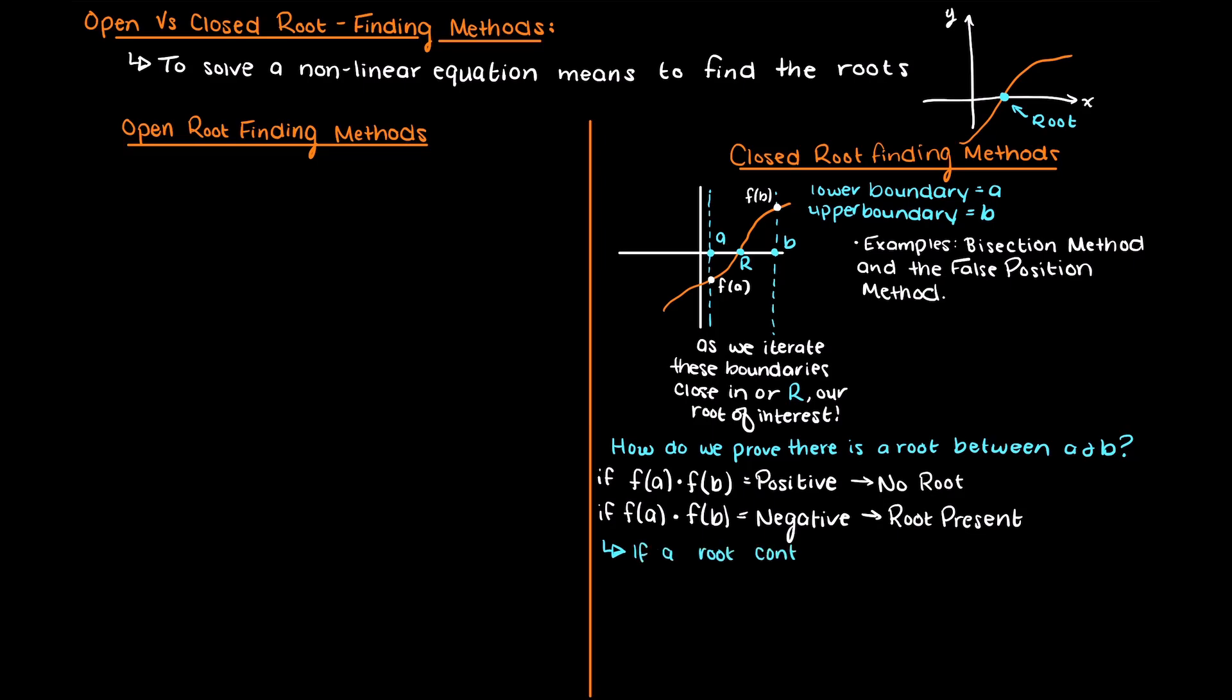One problem with closed root finding methods is that if a region contains zero or two or even more roots, we are going to have a problem. With zero roots we cannot find a root since obviously there isn't a root present.